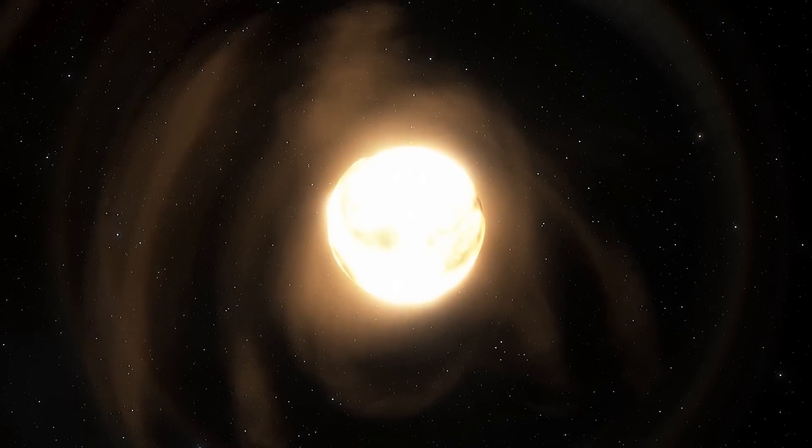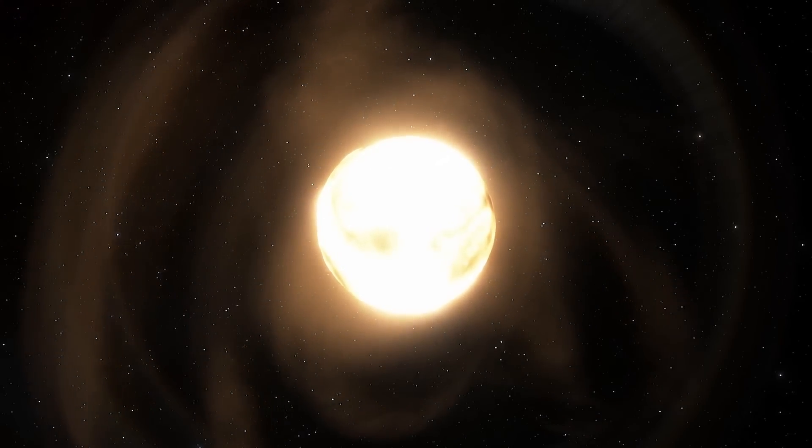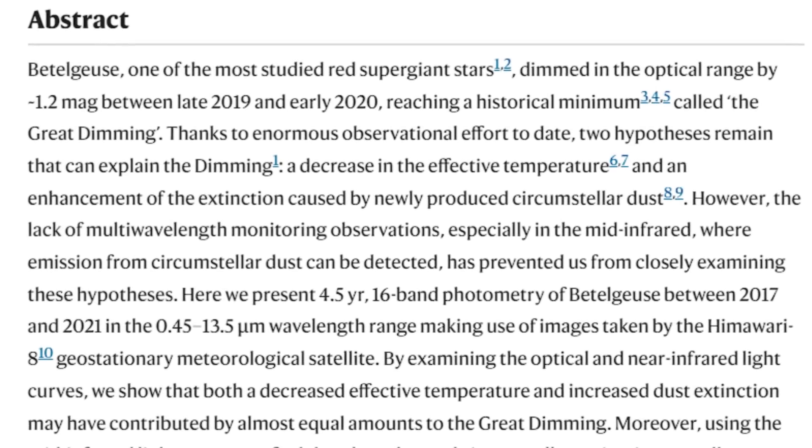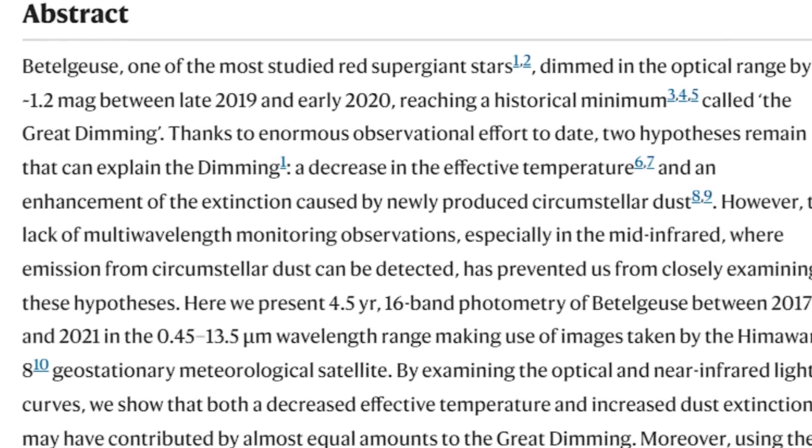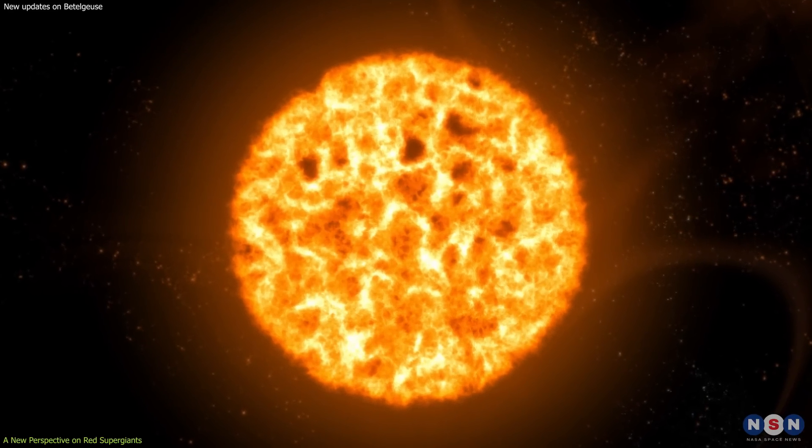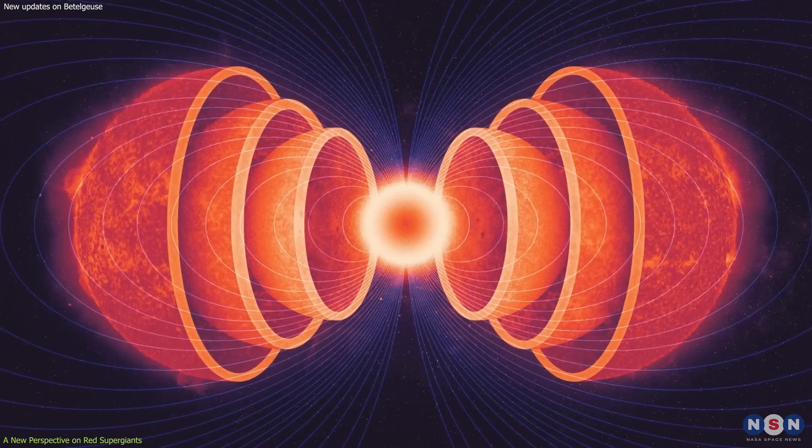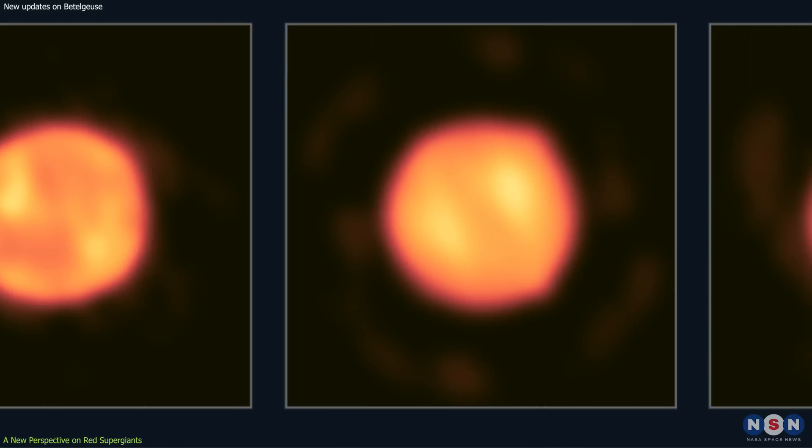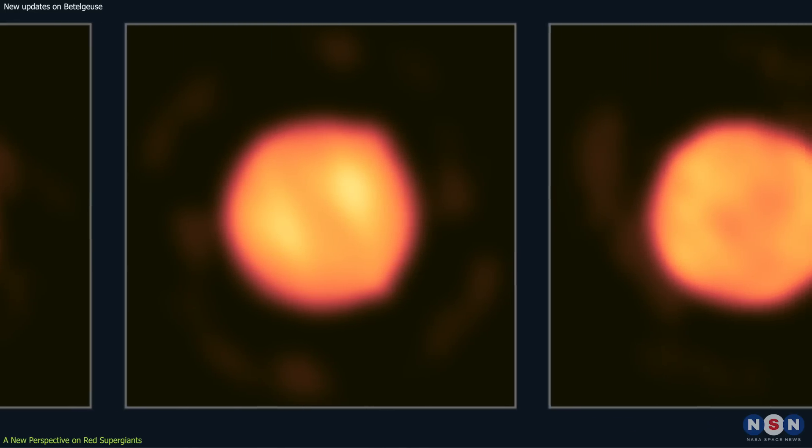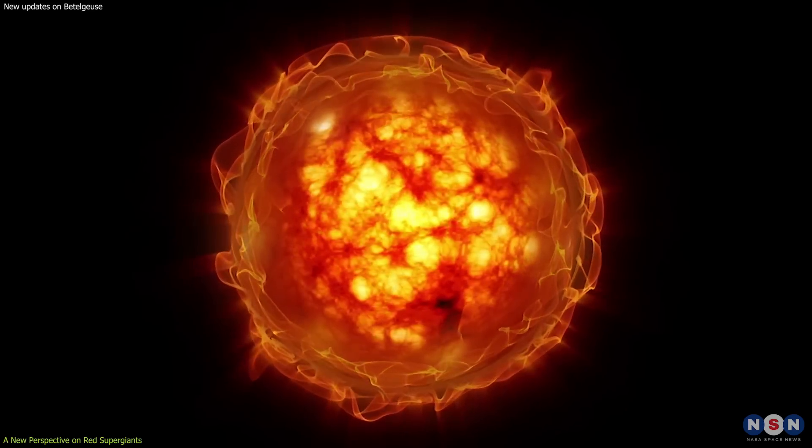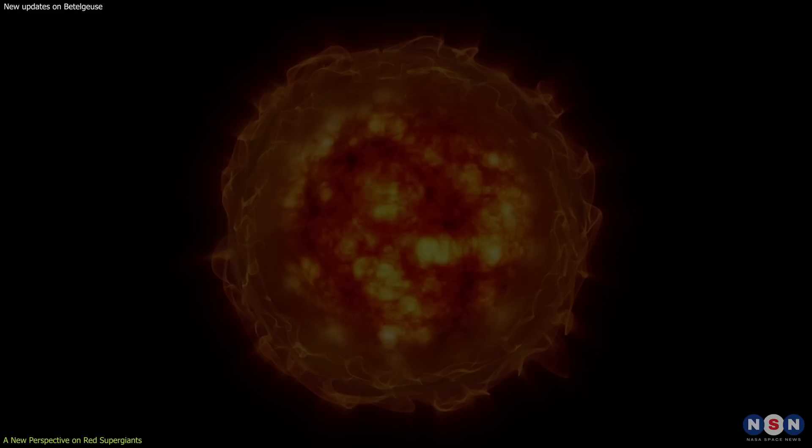The implications of the new study are manifold for understanding Betelgeuse and other red supergiants. First of all, the study provides a clear explanation for the dimming event, which was previously speculated to be caused by various factors such as temperature changes, magnetic fields, or stellar rotation. It shows that dust formation is a key process that affects the brightness and appearance of Betelgeuse, and that it can be triggered by convective cells on its surface.